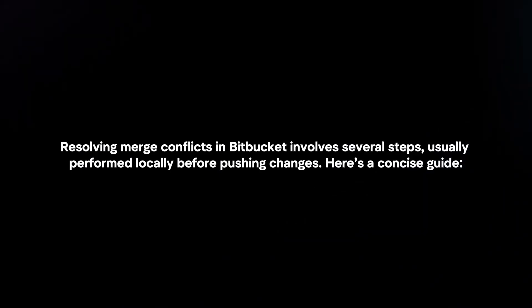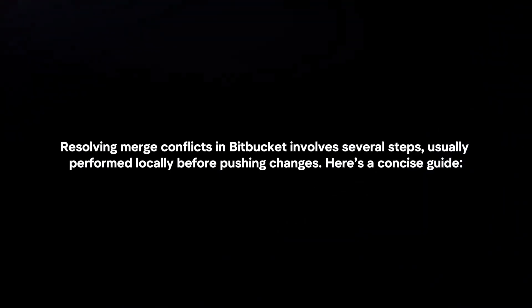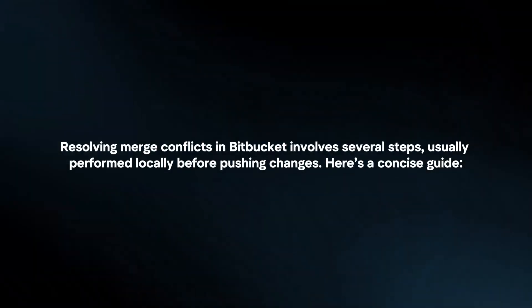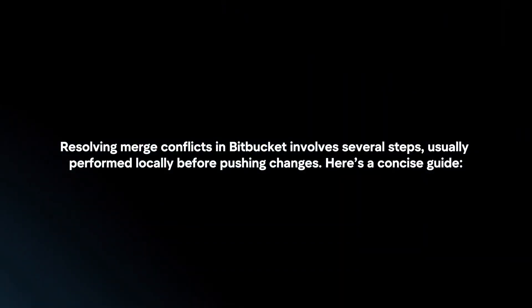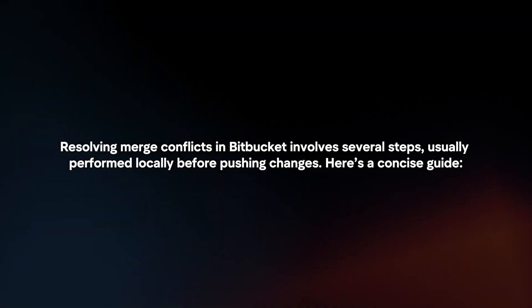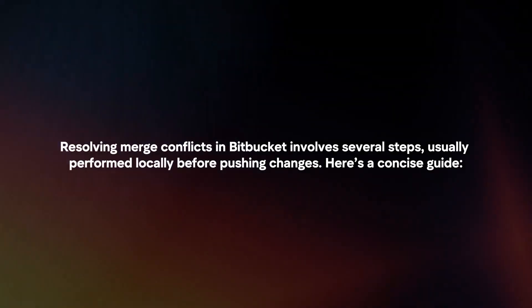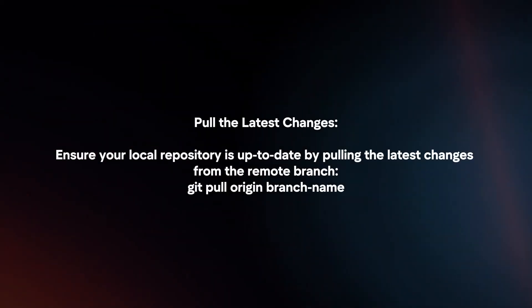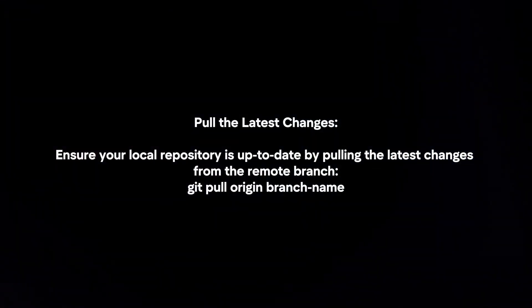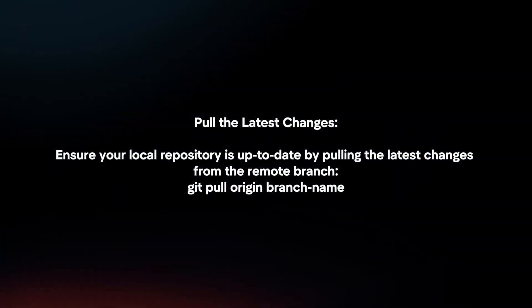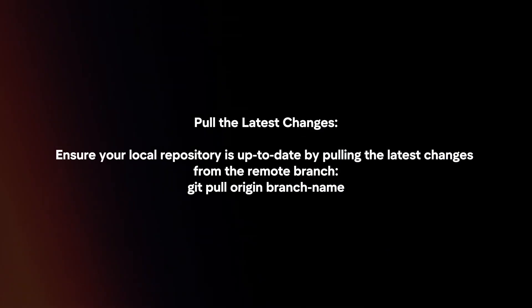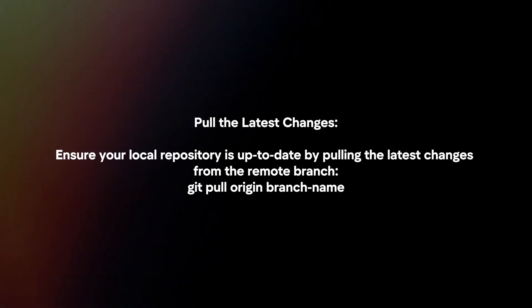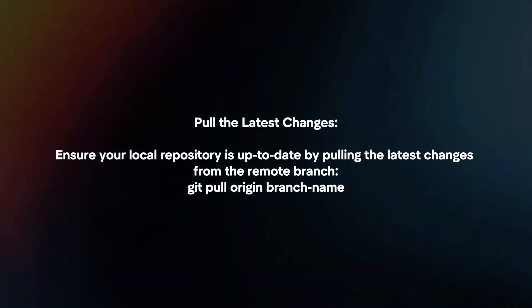Resolving merge conflicts in Bitbucket involves several steps, usually performed locally before pushing changes. Here's a concise guide. First, pull the latest changes — ensure your local repository is up to date by pulling the latest changes from the remote branch.